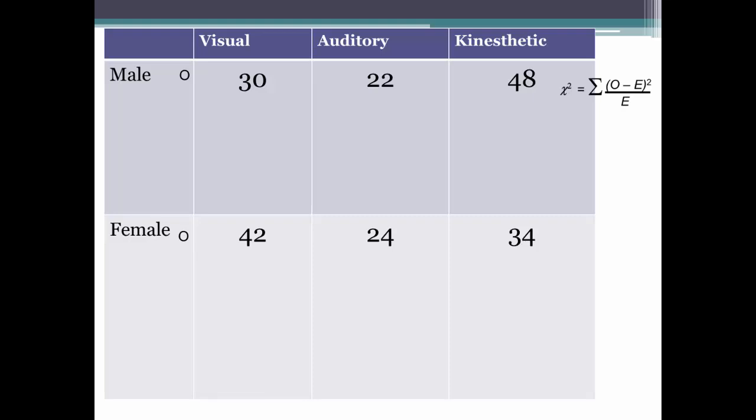You're ready to move on now. You have your observed data, and you've now calculated your expected data. Now you just have to do the same thing you did for the one variable chi-square, following the same formula in each cell, starting with the male visual learners.